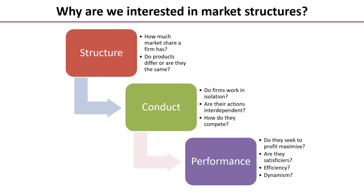For conduct, consider whether firms work in isolation or if there are several firms. If there's more than one, are their actions interdependent? That means each firm must consider what others will do about pricing, supply, and the type of goods they produce before making their own decisions. This leads to how firms actually compete — it may not only be on price; they might compete in other ways.